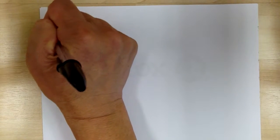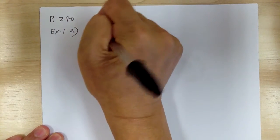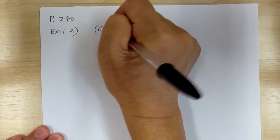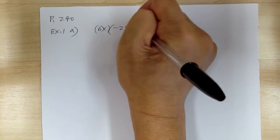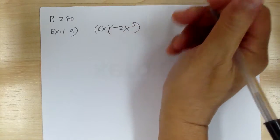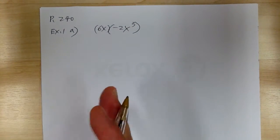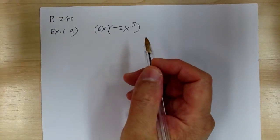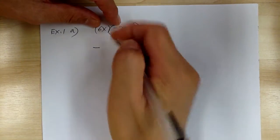Let's go over example 1 and start with a. So you have 6x times negative 2x to the 3. When you multiply, first you take care of the sign, then the number, then the alphabet. So positive times negative will give you negative, 6 times 2 will give you 12.